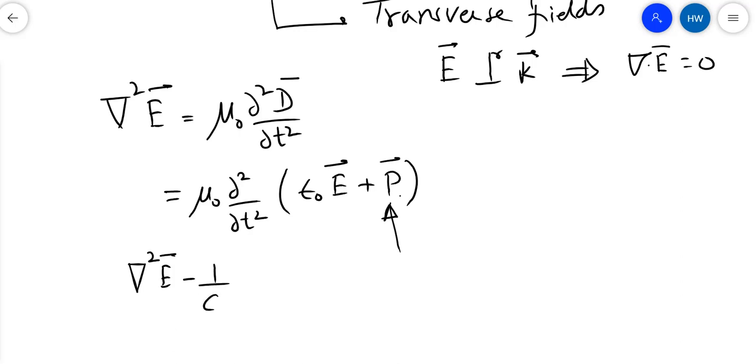Hence what we get is the following: I have del squared E minus 1/c² d²E/dt², this is when I am taking this first term to the left hand side, and on the right hand side I continue with μ₀ d²P/dt². Recall I have used the fact that c² is basically one over ε₀μ₀.